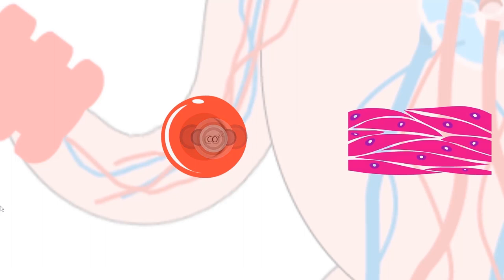This blood, which is rich in carbon dioxide, needs to deliver this carbon dioxide to the lungs by passing through the heart.